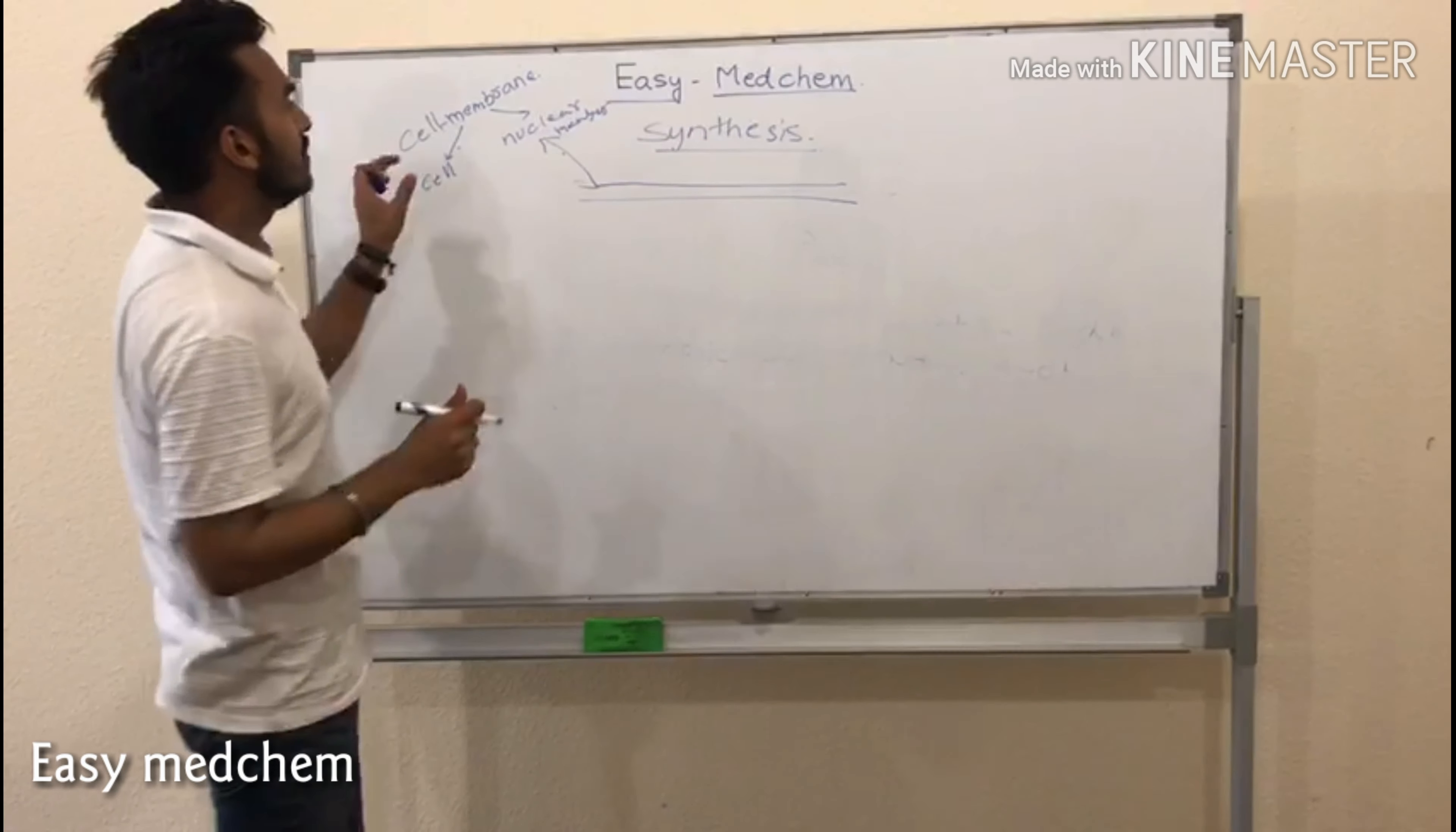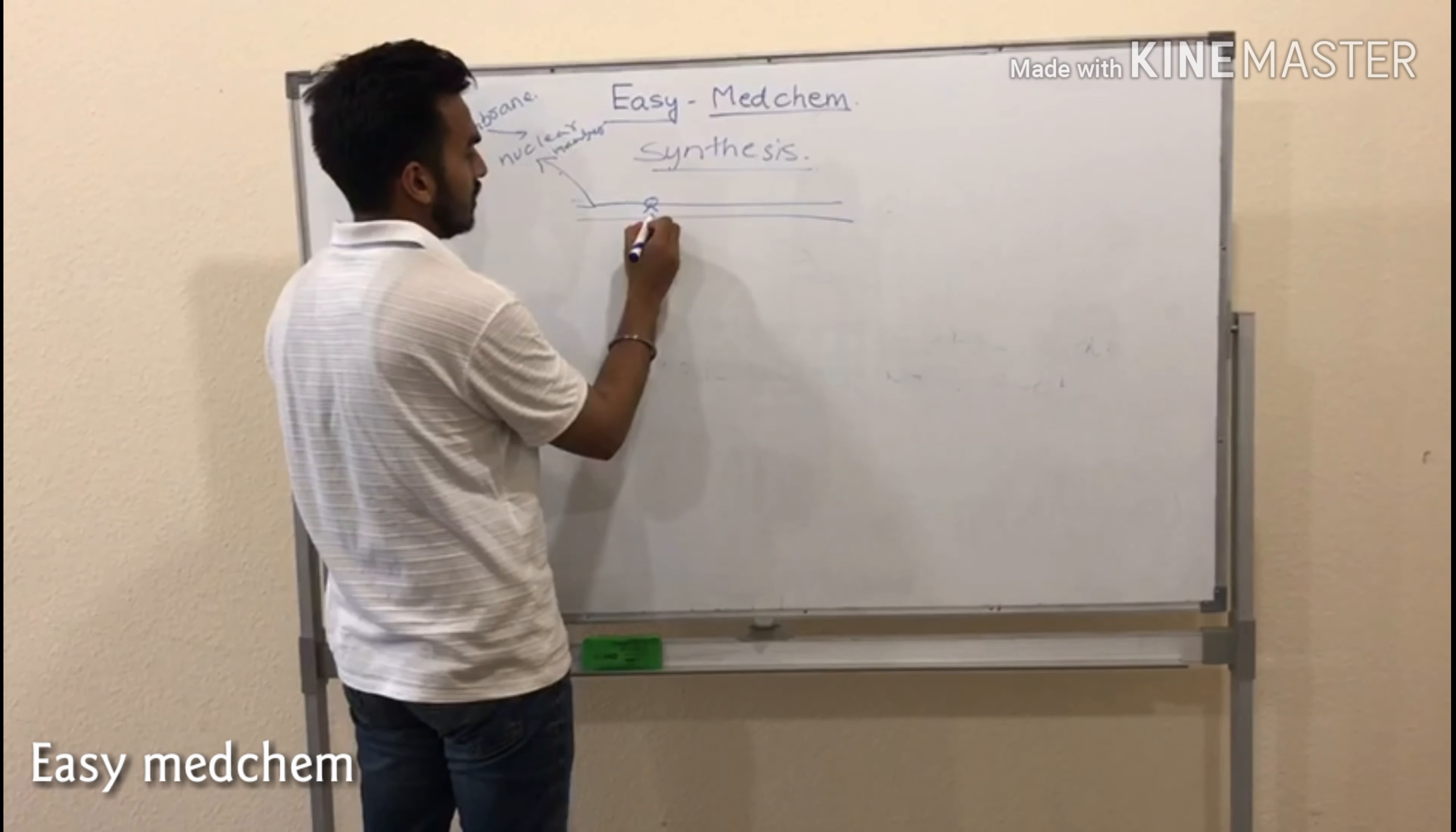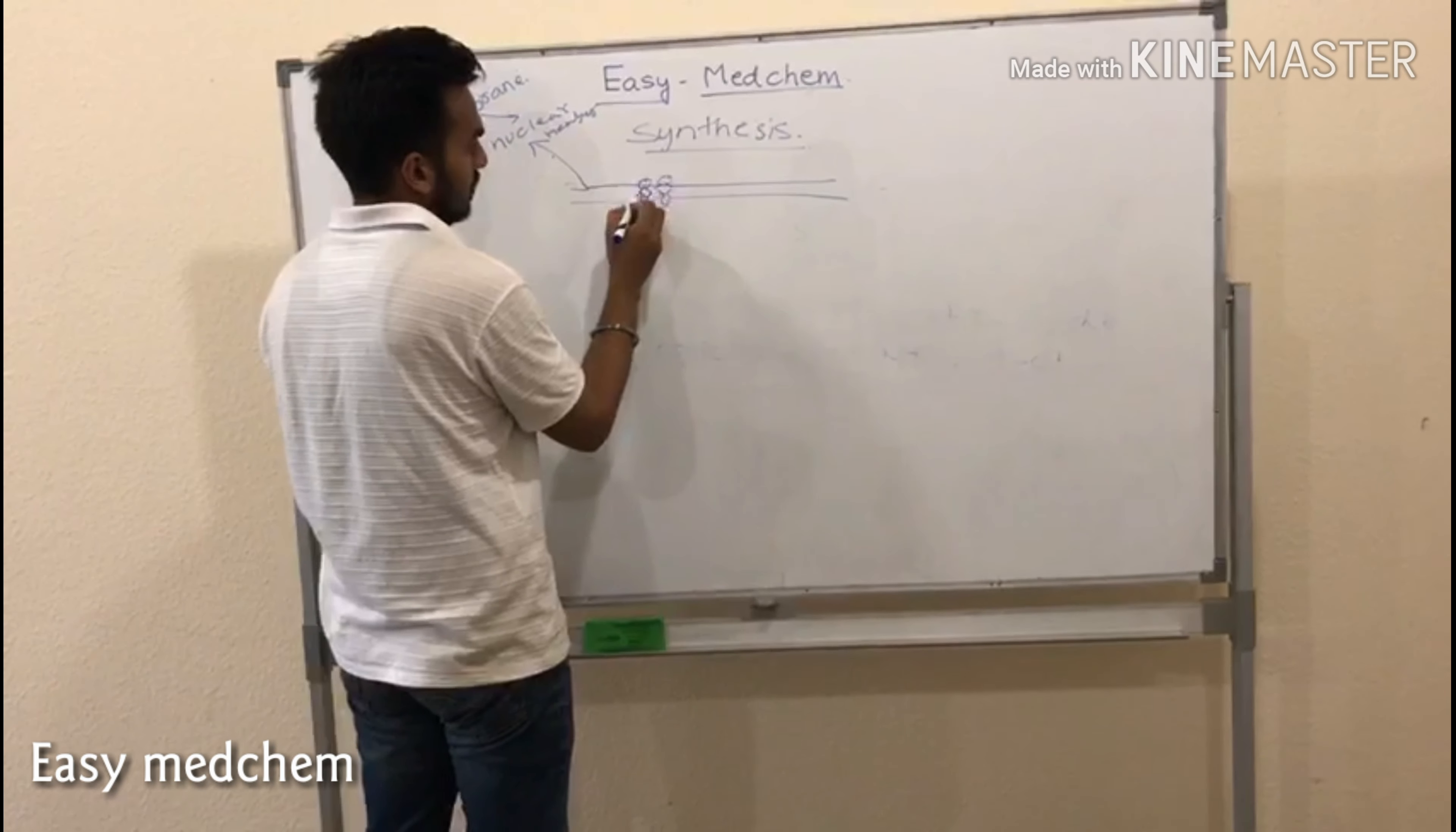As the cell membrane is made up of phospholipids, these are phospholipids. They are bilipid here.